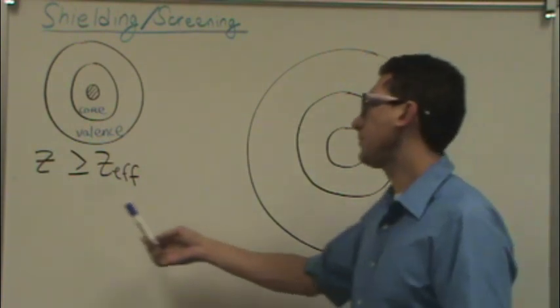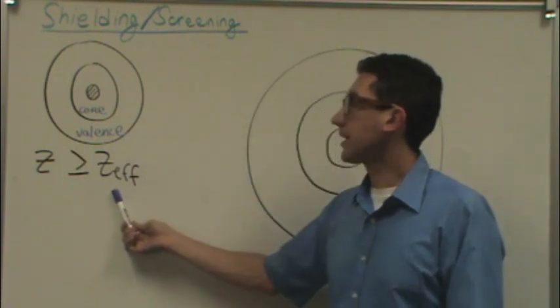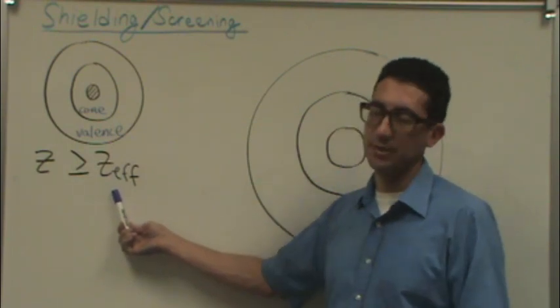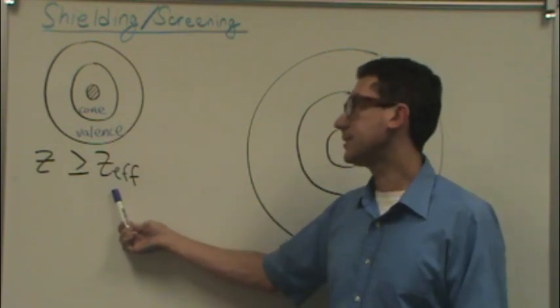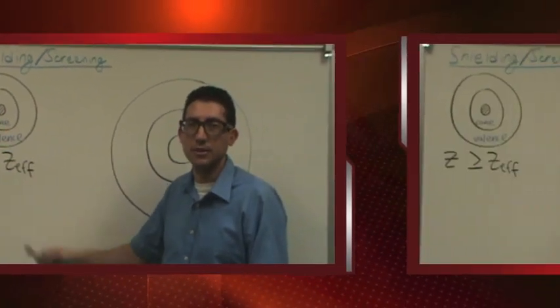So while there might be, let's pick a different number, eight protons, the valence electrons, because they're shielded or screened by the core electrons, might think that instead of eight, there's only six protons in the nucleus.